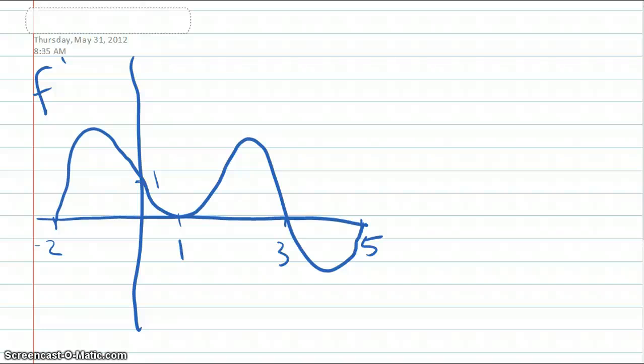Okay, so the graph of f prime is shown here from the interval negative 2 to 5, and the question is, on what intervals is f increasing? When f is increasing, f prime will be positive, so it's the interval from here to here, so the answer is from negative 2 to 3.